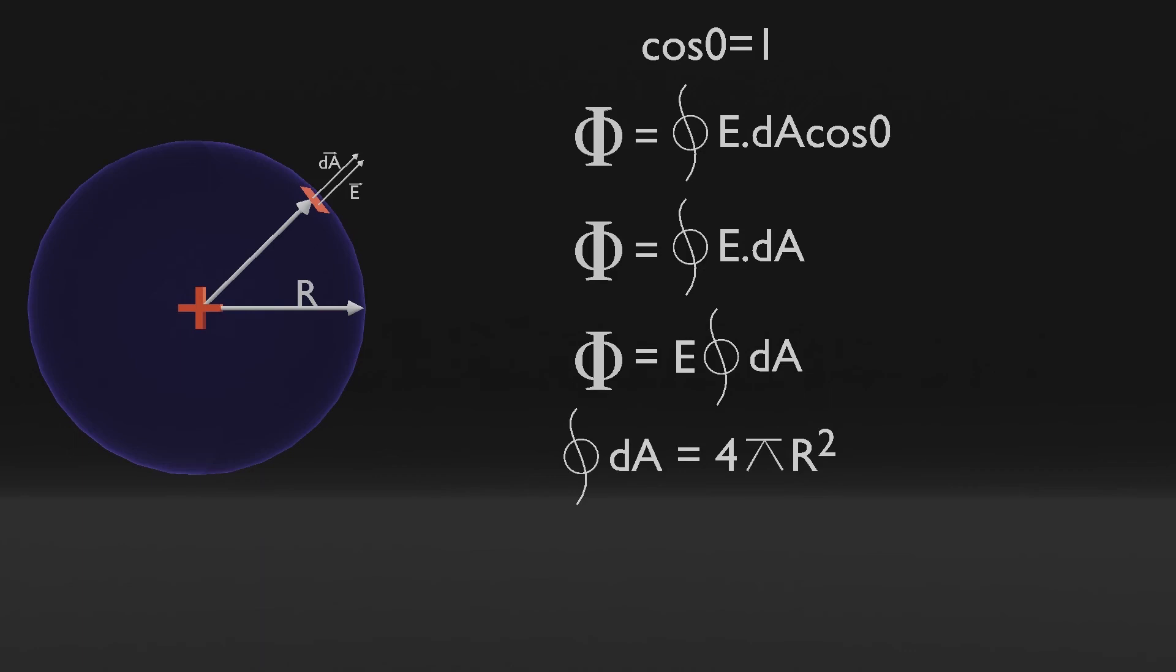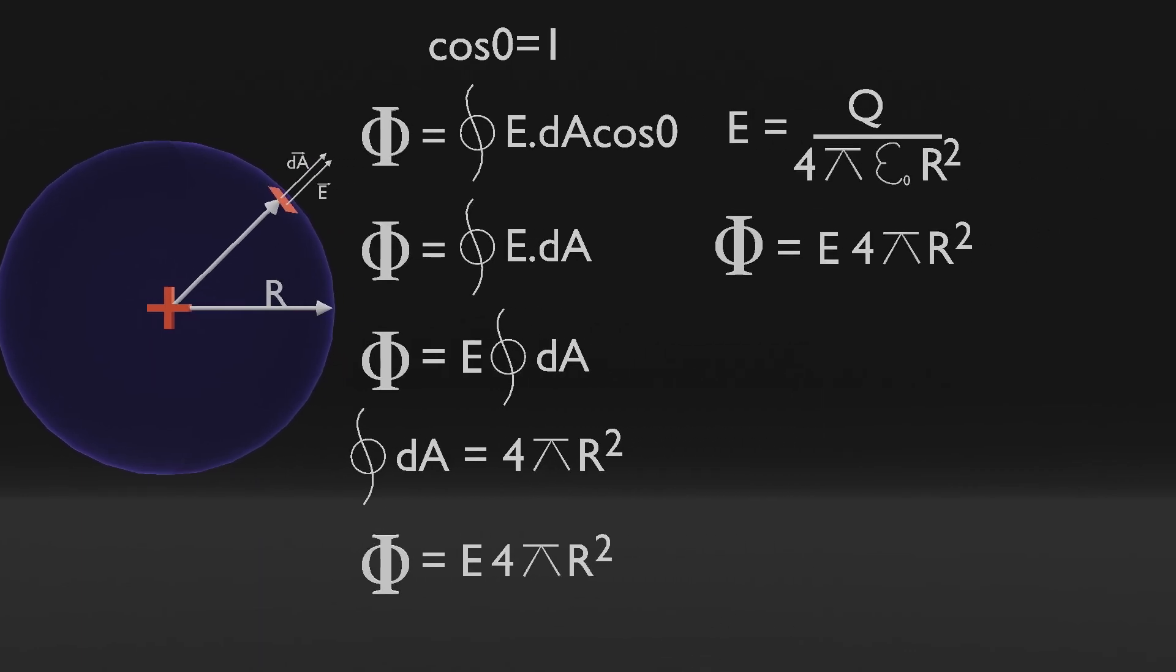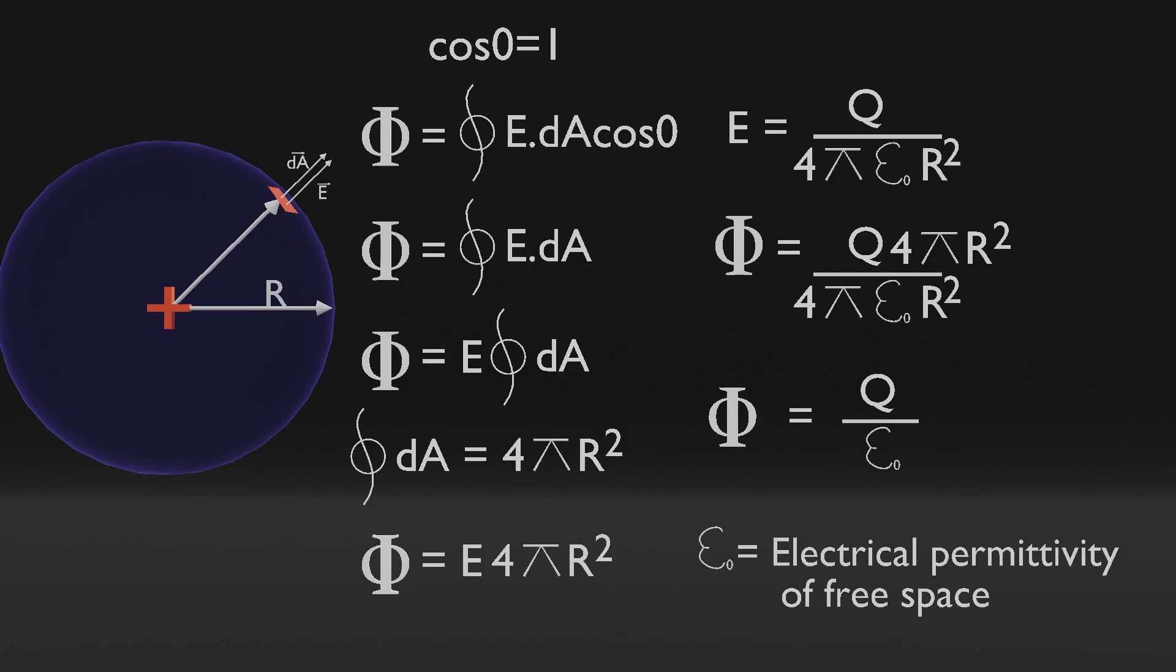By putting the area value into the flux formula, we find that the total electric flux is equal to q divided by epsilon, where epsilon 0 is the electrical permittivity of free space.